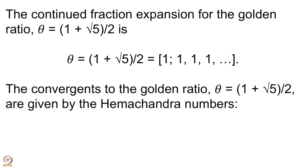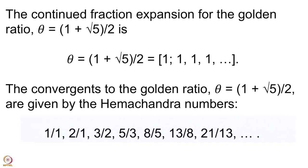These convergents are the Hemachandra–Fibonacci numbers: 1/1, 2/1, 3/2, 5/3, 8/5, 13/8, 21/13, and so on. Since there is just a 1 at each step in the continued fraction, you are simply adding consecutive terms.